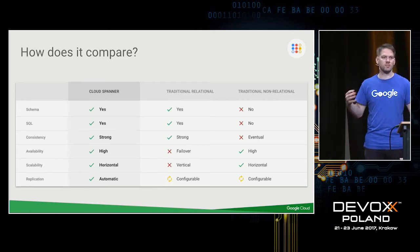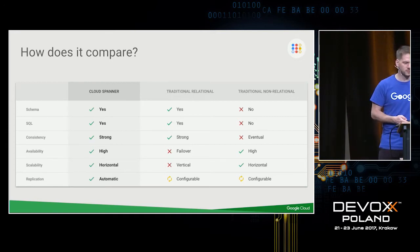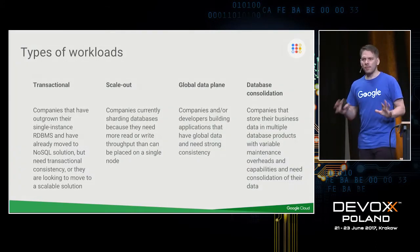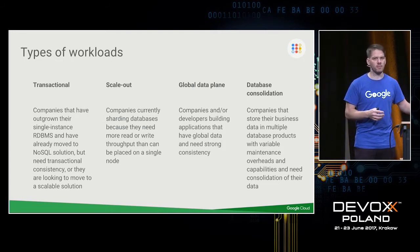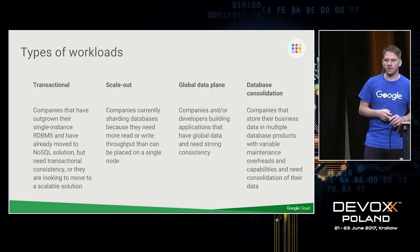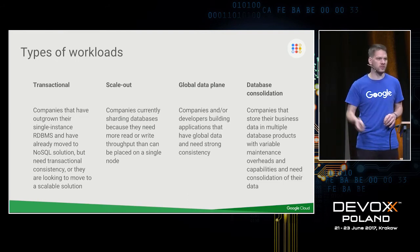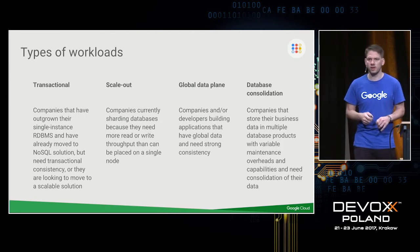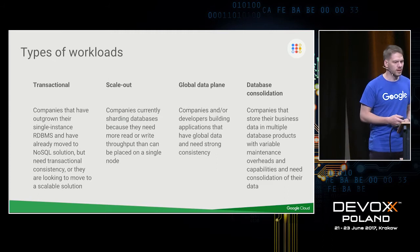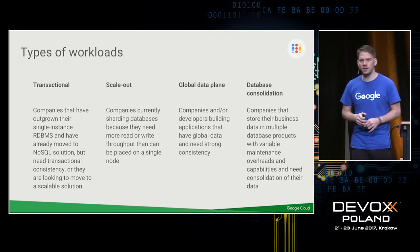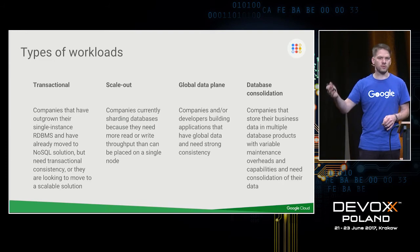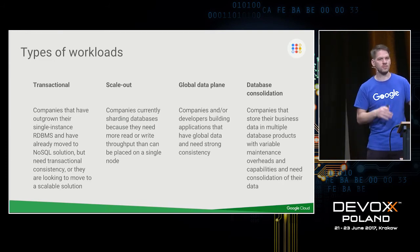Spanner combines these two worlds, giving you the best of both. Typical workloads include scenarios where you need to scale a lot of writes and reads horizontally while keeping them transactional. Another use case is an identity service or a global data plane — a globally consistent database for things that must be transactional. For example, everything a user does on Google Cloud Platform — starting VMs and so on — is backed by Spanner as the global data plane.